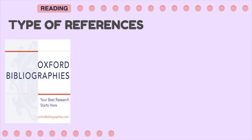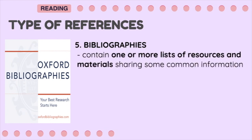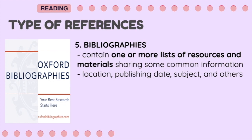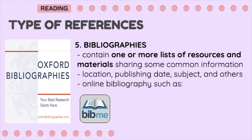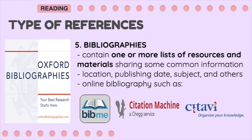The fifth type of reference is Bibliographies. It contains one or more lists of resources and materials sharing common information such as location, publishing date, subject, and others. Bibme is one of the most functional free online bibliography and citation tools on the internet. Citation Machine is one of the easiest to use free online bibliography and citation tools. Citefast is a multi-purpose free online bibliography and citation tool that e-learning content developers can use for knowledge organization; it is also a reference manager and task management platform.